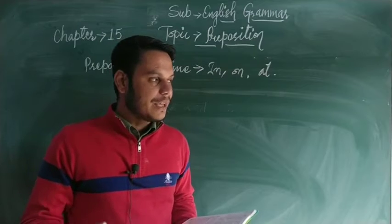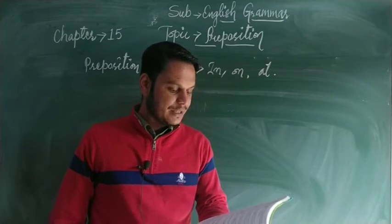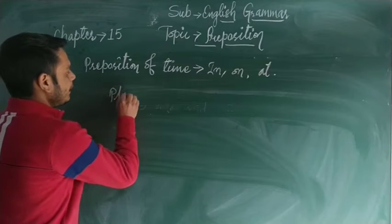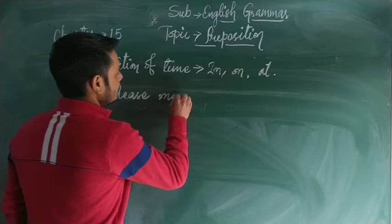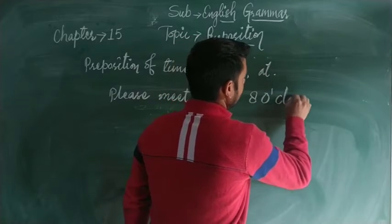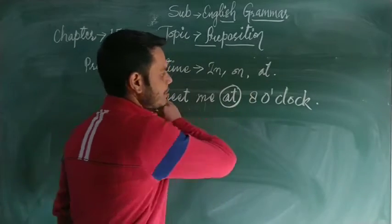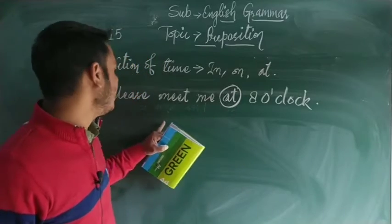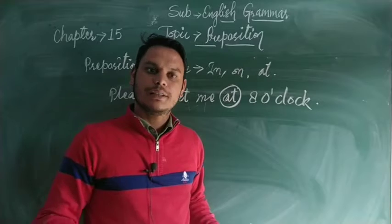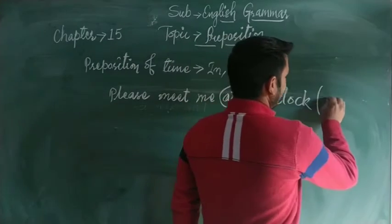Prepositions of time — at, on, in — can be used to indicate time. For example: 'Please meet me at eight o'clock.' Here 'at' is the preposition of time. We use 'at' when there is an exact time — for instance, three o'clock, five o'clock, six o'clock. If you are telling someone an exact time, use 'at' before the time.